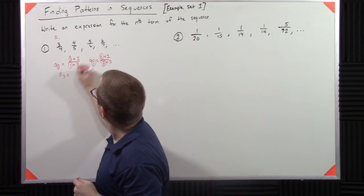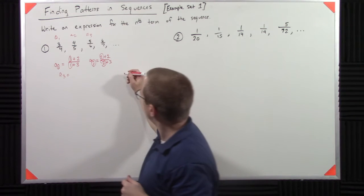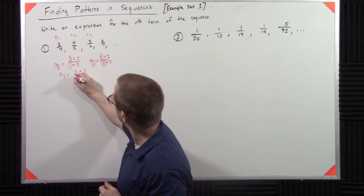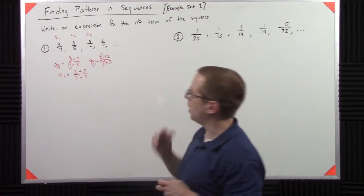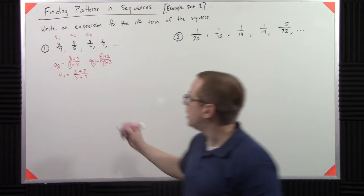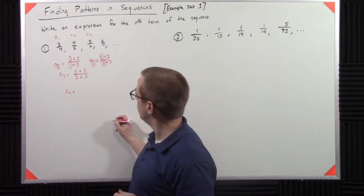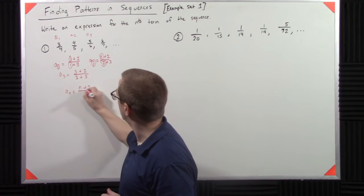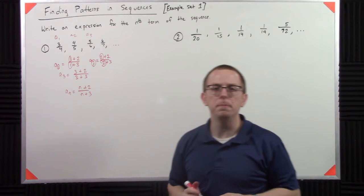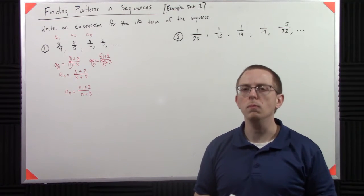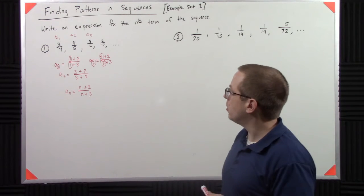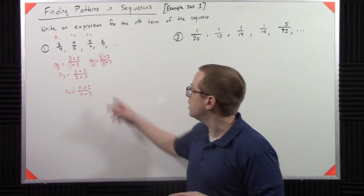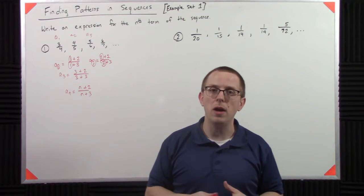A3, that's 3 plus 2 over 3 plus 3. So what if I said A sub n? Well, by the pattern, it would be n plus 2 over n plus 3. And it turns out that that's actually correct. And the way that we prove that's a little more complicated. But realistically, if this matches the pattern, then you're good.